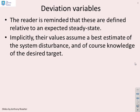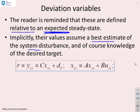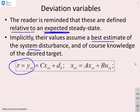Deviation variables. The reader is reminded that these are defined relative to, and here's a key word, the expected steady state. So implicitly, the values assume a best estimate of the system disturbances, and of course, you need to know what the target is. We said assume that the steady state value of the output gets to the target, and using our model parameters, the steady state value of the output is given by c times xss, where x is the steady state state, plus your disturbance estimate.